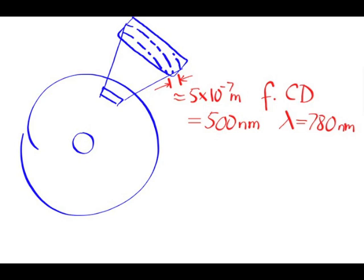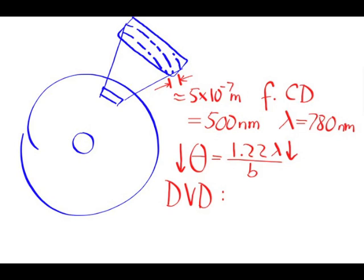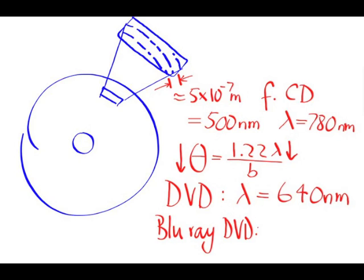To increase the data beyond 700 megabytes, the angle of resolution needs to be reduced further. However, this can be done through a shorter wavelength. The laser used for reading DVDs only has a wavelength of 640 nanometers. For a Blu-ray DVD, the wavelength is as short as 405 nanometers, which lies in the blue part of the spectrum of visible light.